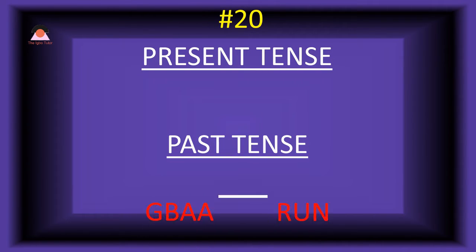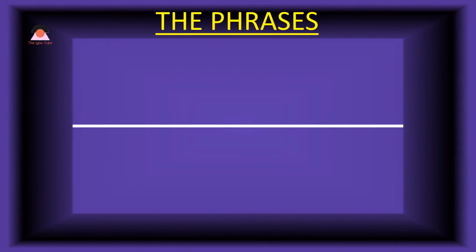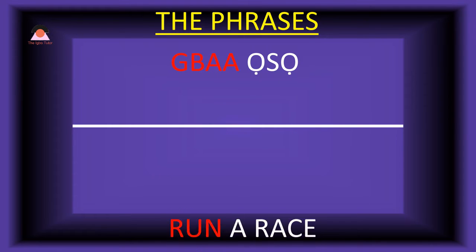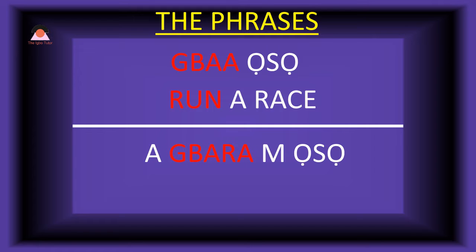Word number twenty: 'baa,' meaning 'run.' The past tense of baa is 'bara,' meaning 'ran.' Present tense phrase: 'baa oso' — run fast. Past tense: 'a-baram oso' — I ran fast.